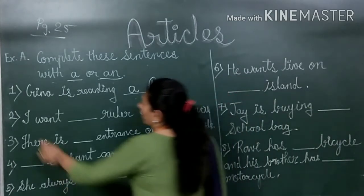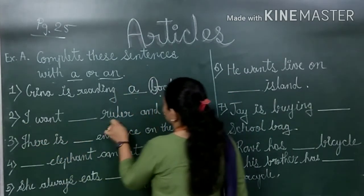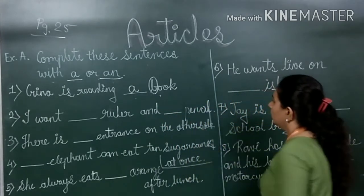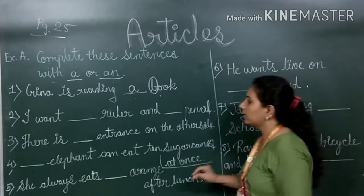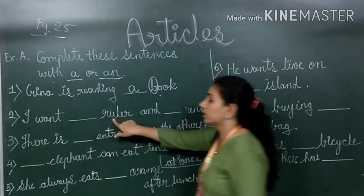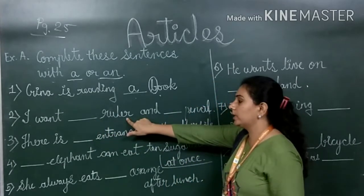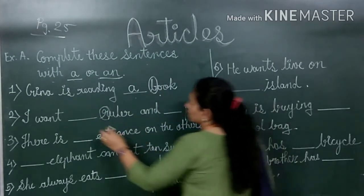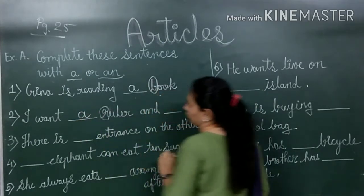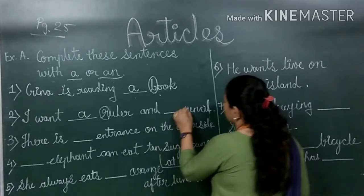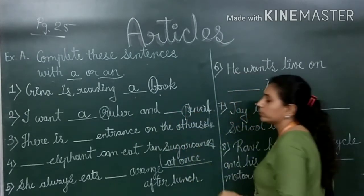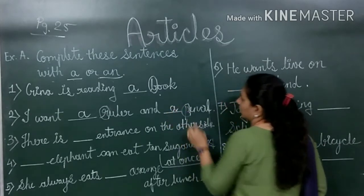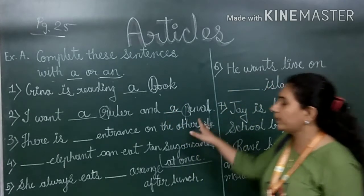The next sentence is: I want blank ruler and blank pencil. 'Ruler' starts with R, which is a consonant, so we use 'a ruler'. 'Pencil' also starts with P, which is a consonant, so we also write 'a pencil'. The answer is: I want a ruler and a pencil.